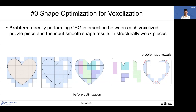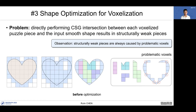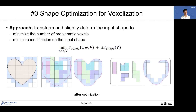If we directly perform CSG intersection between each voxelized puzzle piece and the input smooth shape, there will be some structurally weak pieces. We observe that structurally weak pieces are always caused by problematic voxels. Our approach is to transform and slightly deform the input shape to minimize the number of problematic voxels while minimizing modification to the input shape. In this 2D example, after optimization, there are no structurally weak pieces.